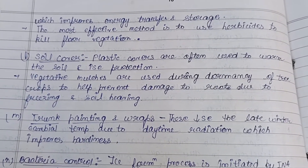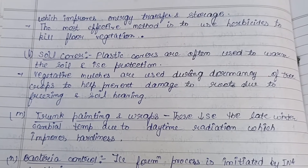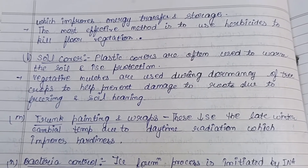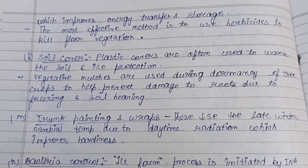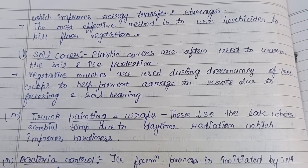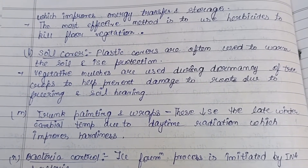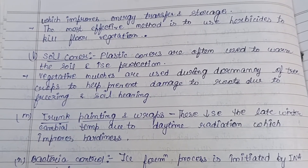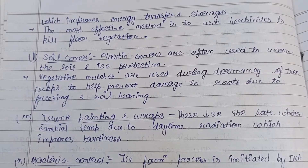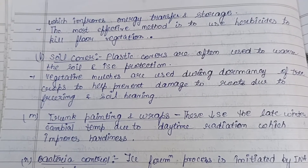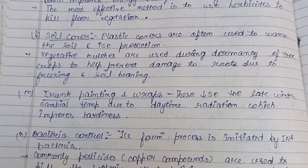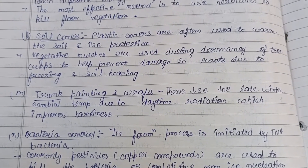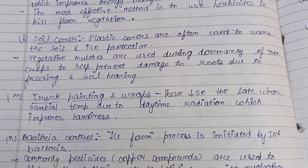For soil covers, plastic covers are often used to warm the soil and increase protection. Vegetative mulches — leftovers of trees or other vegetation — are used during dormancy of tree crops to help prevent damage to roots due to freezing and soil heaving.